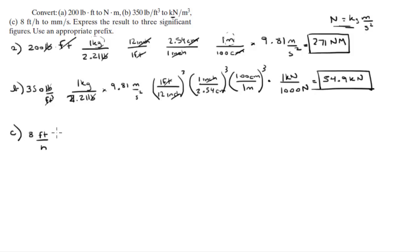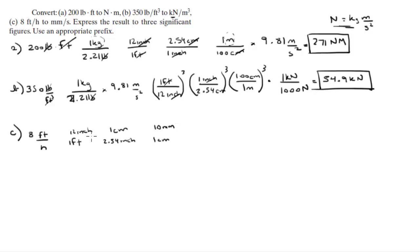Part C: convert 8 feet per hour to millimeters per second. First, get rid of the feet: in one foot there are 12 inches, in 2.54 inches there is one centimeter, and in one centimeter there are 10 millimeters. That eliminates feet, inches, and centimeters, leaving millimeters.